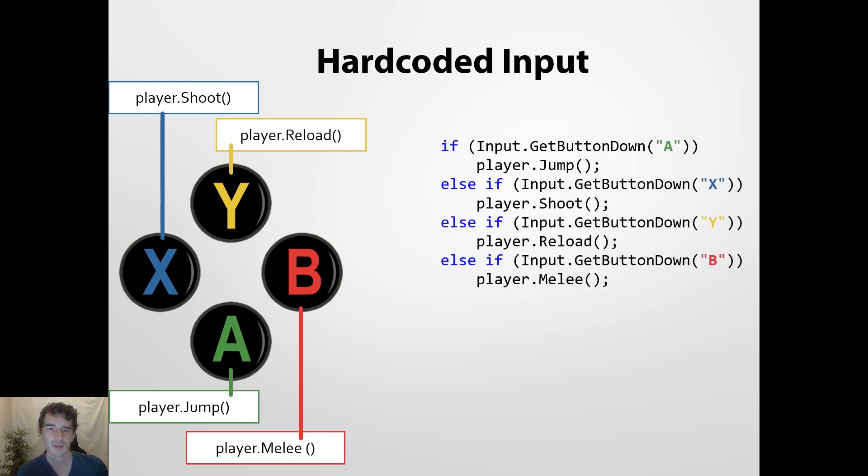And if you code this, it would look something like this. As you can see, I directly connect the A button with the jump method, and the same goes for shooting, reloading, and melee. And that's usually not a very good thing, because if you're doing it right, you insert a layer of abstraction between the input and the things that the game needs to do when the input comes.